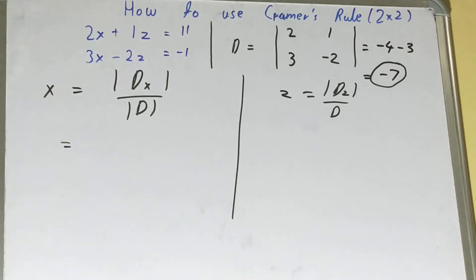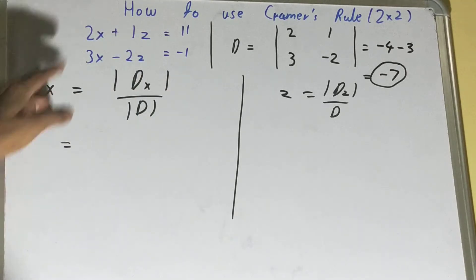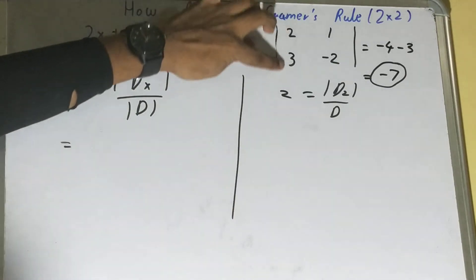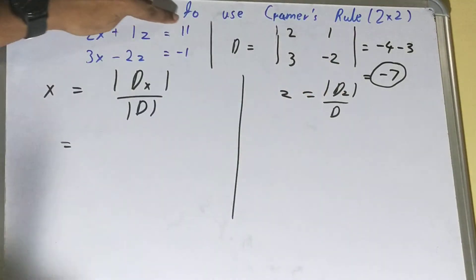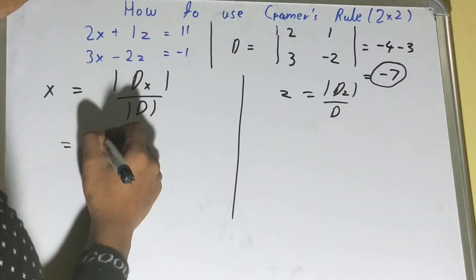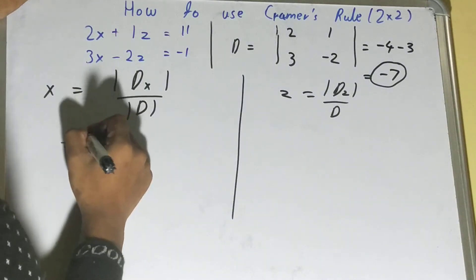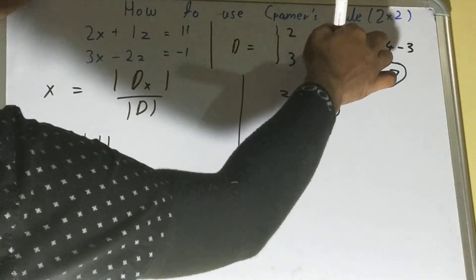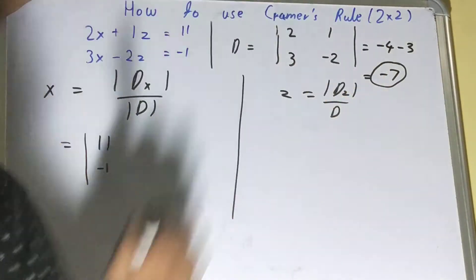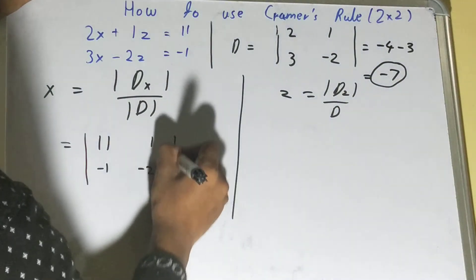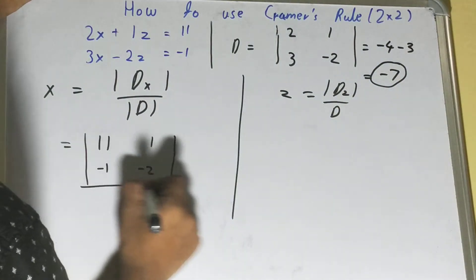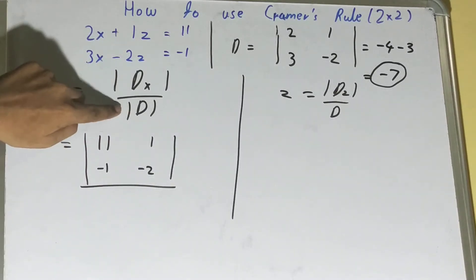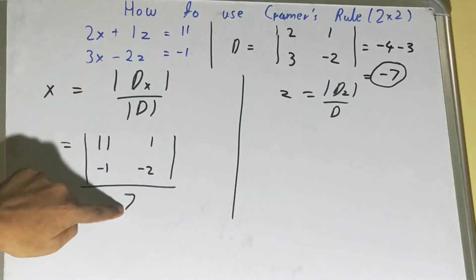For the dx matrix, you need to replace the coefficients of x with the constant values — that is 11 and minus 1. We write it like that. In the denominator we have minus 7, but since we have the absolute sign, we consider only the positive value, which is 7.